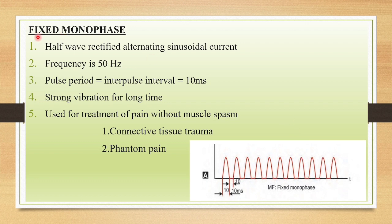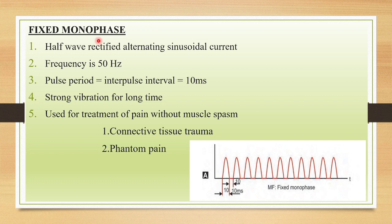The first mode is fixed monophase. In this, you will have half wave rectification, and the frequency will be 50 Hz. The pulse period is equal to the interpulse interval, that is 10 milliseconds — so 10 milliseconds ON to 10 milliseconds OFF. This mode produces stronger vibration for a prolonged period of time and can be used for treating pain without muscle spasm, for cases like connective tissue trauma or phantom limb pain.